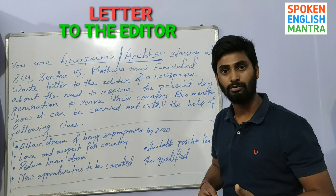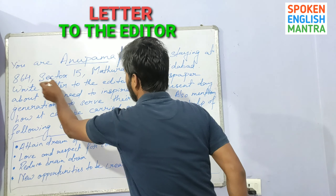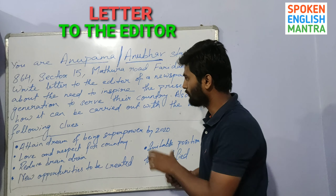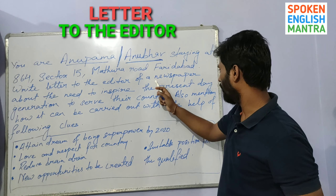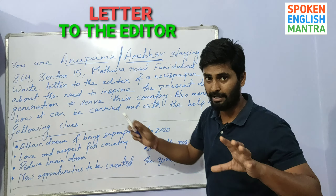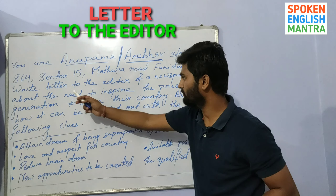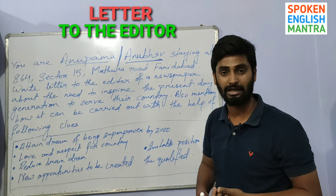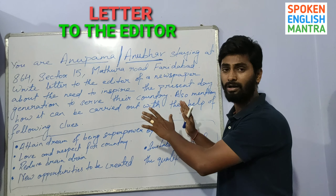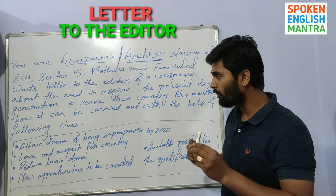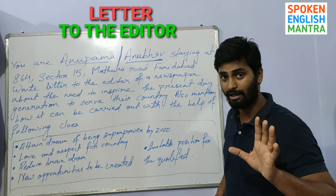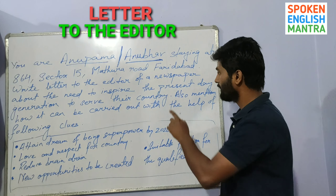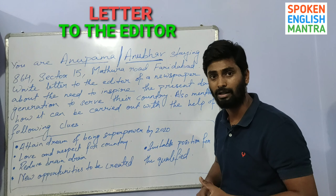Now, the oblique option here: you are Anupama or Anubhav. If you are a girl you will be Anupama, and if you are a boy you will be Anubhav. The address given is 864 Sector 15, Mathura Road, Faridabad. So basically, when you write the letter, you will write the address given to you according to the main question.